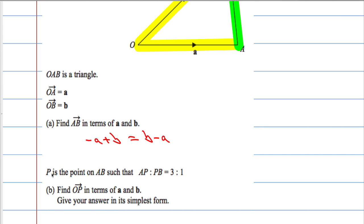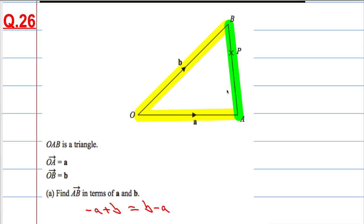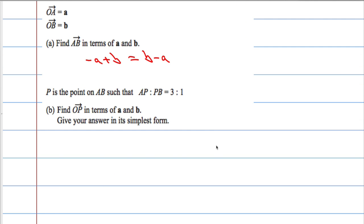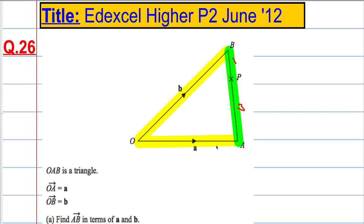Okay, the next part. P is the point on AB such that AP to PB is 3 to 1. So, it's in a ratio of 3 to 1. And we now want the vector OP in terms of A and B. So we want this new vector, OP, which goes from here to here using A and B.